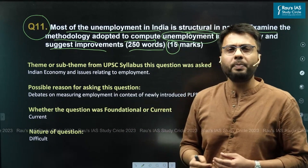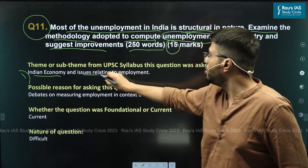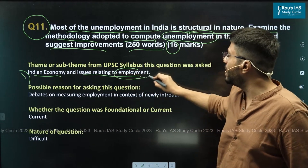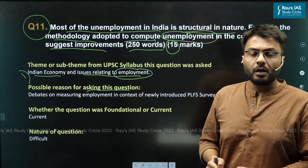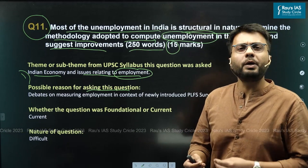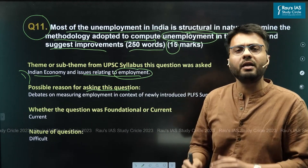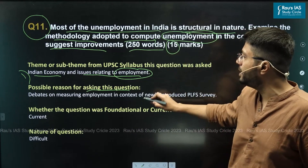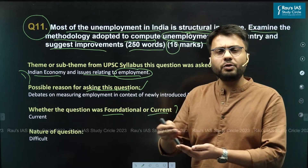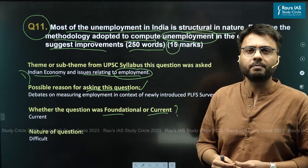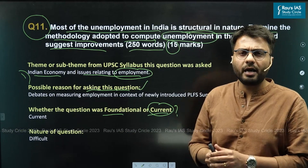The theme UPSC picked this question from is GS paper 3's first topic: Indian economy and issues relating to employment. The possible reason UPSC asked this question is that for the past few months there have been debates in newspapers about the methodologies employed by the government to estimate the number of people employed in the Indian economy. While employment is a static topic, this question is inclined towards current affairs.